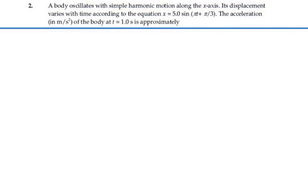Here's problem 15.2. A body oscillates with simple harmonic motion along the x-axis. Its displacement varies with time according to the equation x equals 5 sine of (pi t plus pi over 3). The acceleration in meters per second squared of the body at t equal 1 second is approximately...